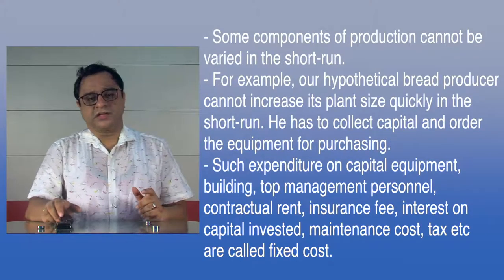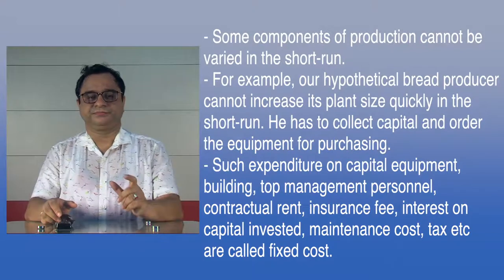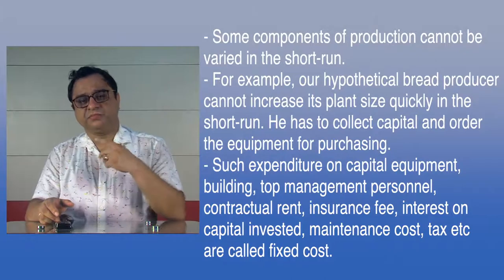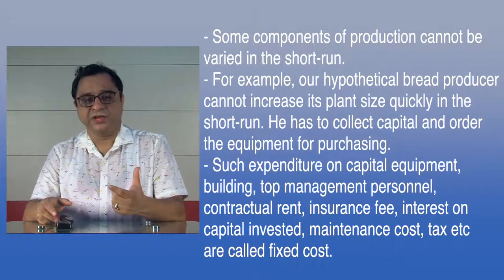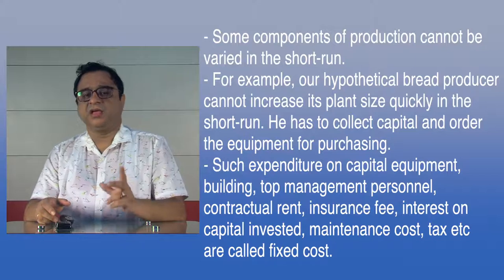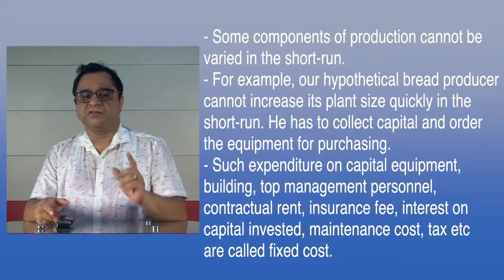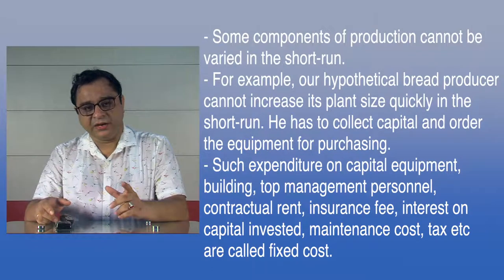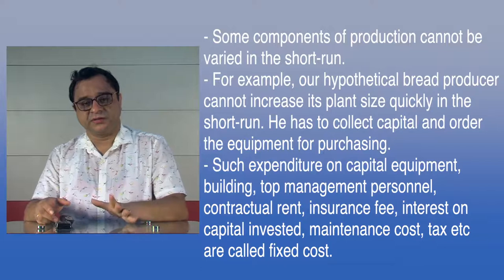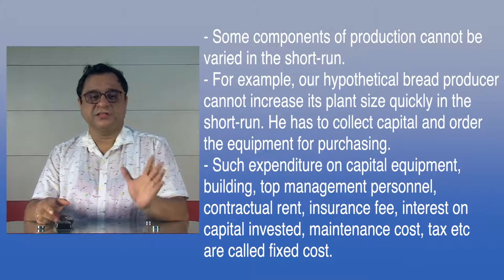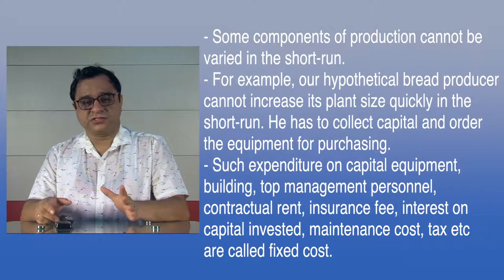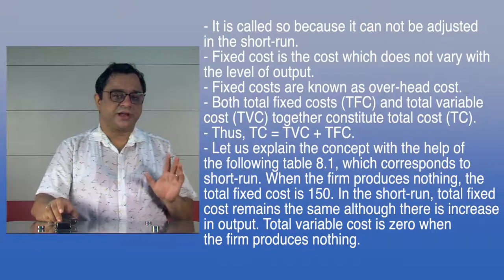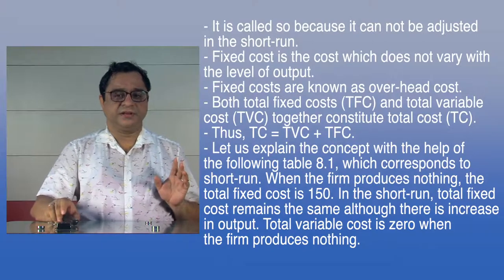On the other hand, some components of production cannot be varied in the short run. For example, our hypothetical bread producer cannot increase its plant size quickly in the short run. He has to collect capital and order the equipment for expansion. Such expenditure on capital equipment, building, top management personnel, contractual rent, insurance fee, interest on capital invested, maintenance cost, tax, etc. are called fixed cost, because it cannot be adjusted in the short run.